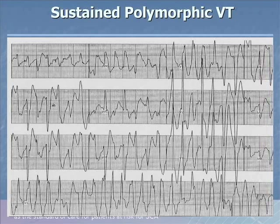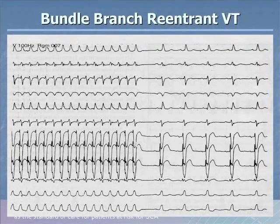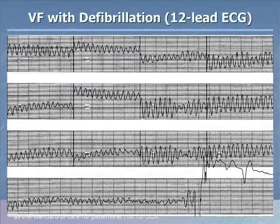Sustained polymorphic ventricular tachycardia shows beats that change on almost a beat-to-beat basis, particularly in lead two. Bundle branch reentrant ventricular tachycardia is shown in sinus rhythm with P waves followed by QRS complexes, but the QRS morphology looks the same in tachycardia and sinus rhythm — you could easily think this was a supraventricular tachycardia with bundle branch block, and it would take an EP study to prove otherwise. Here's somebody in ventricular fibrillation who gets shocked back to sinus rhythm.